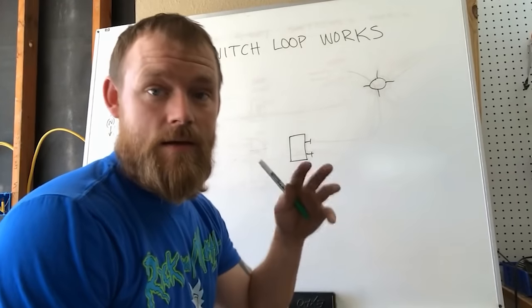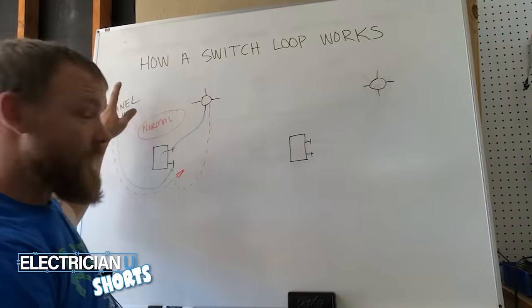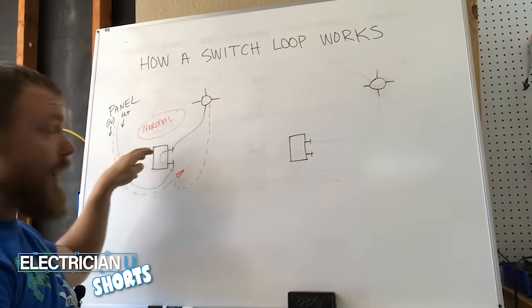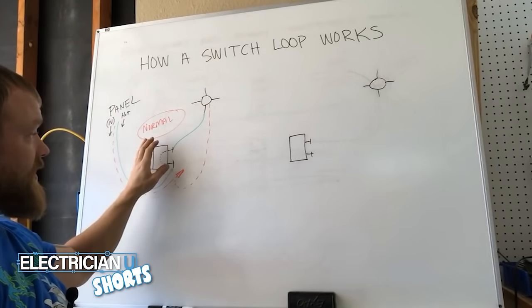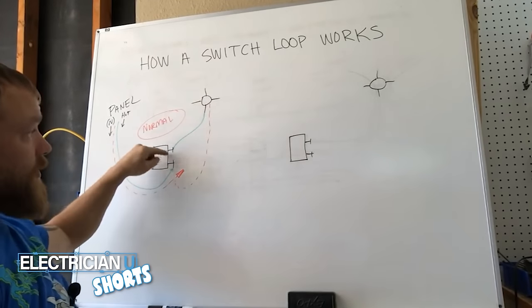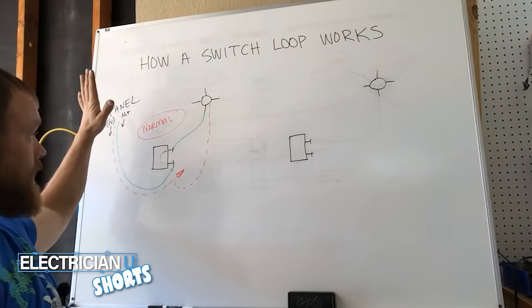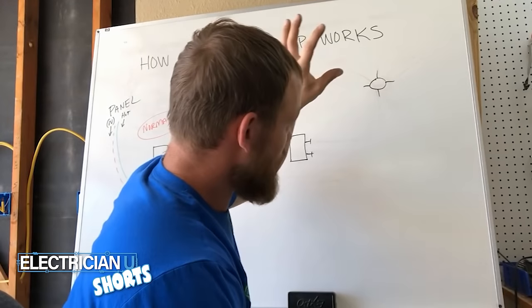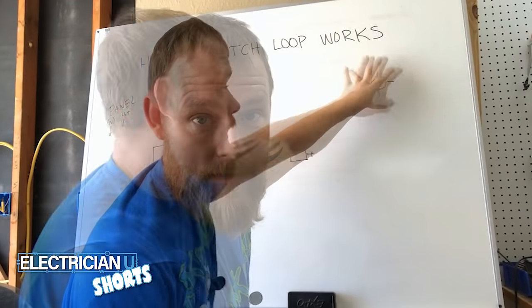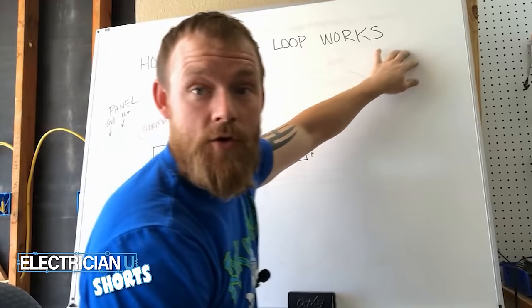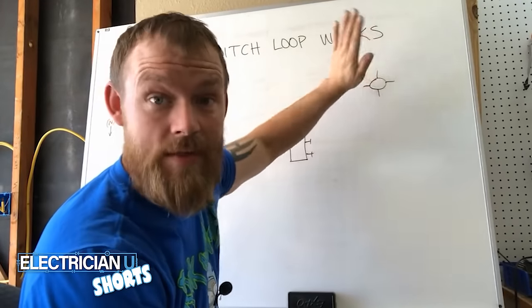Alright, so the difference in a switch loop is that instead of bringing our incoming hot over to the switch first and then running our leg up and creating a loop that comes back to the panel, we're going to bring our hot into the light. The whole idea is that you're sending a hot and a neutral into here and you're leaving that neutral up.